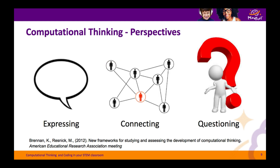Finally, Brennan and Resnick identified three perspectives used in computational thinking. Computational thinking can be used to express ourselves in different ways through different media. It can also help us share our work with others and connect in new ways to people both online and offline. Finally, computational thinking can prompt us to ask questions about the digital world and our place within it.